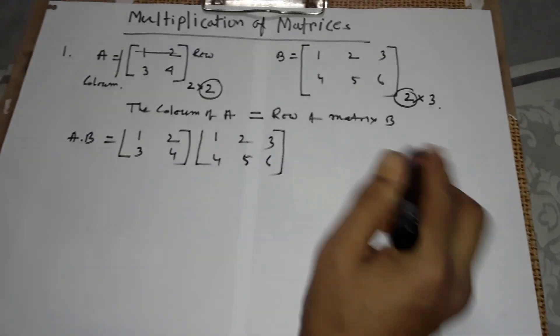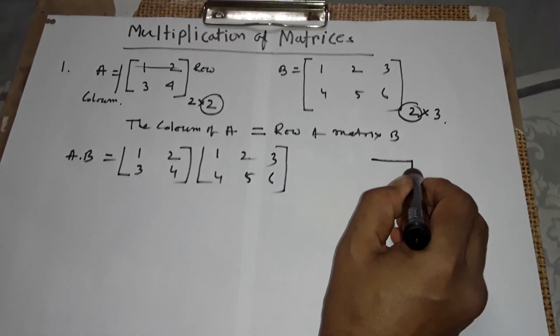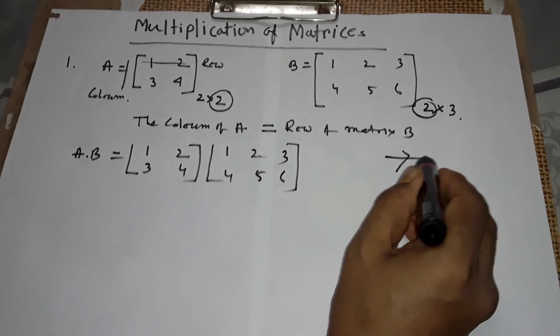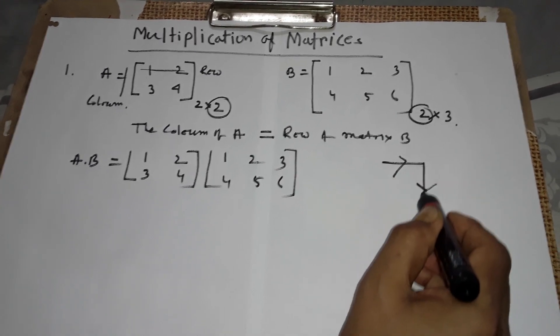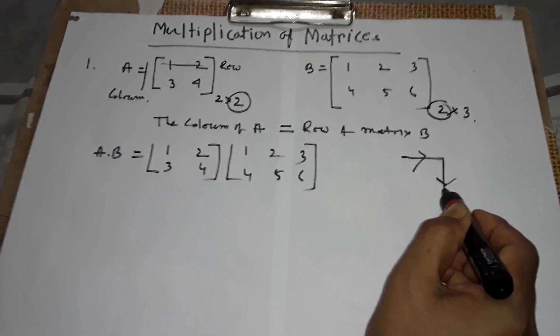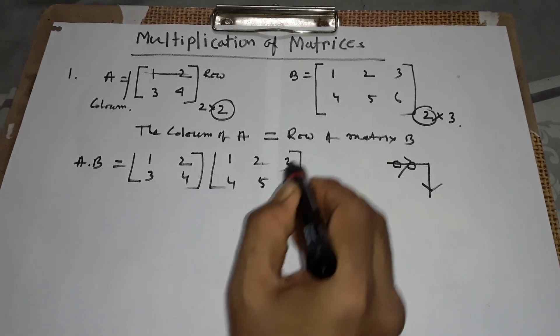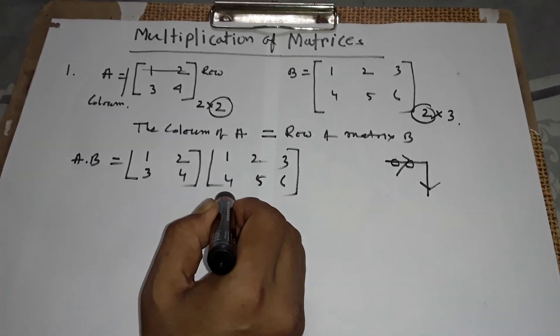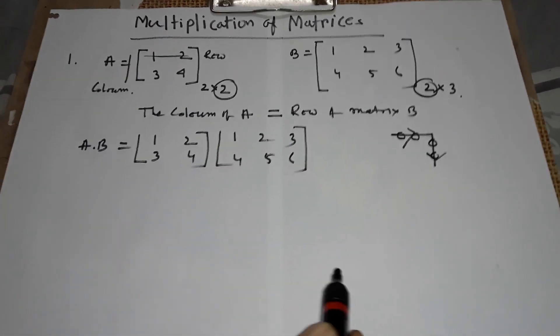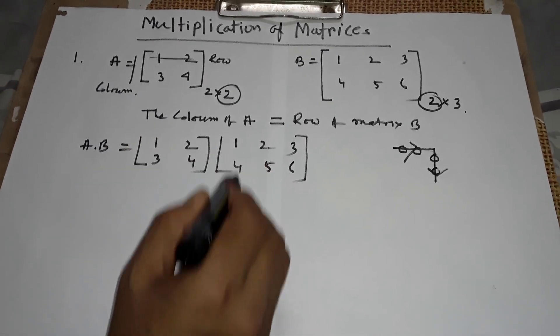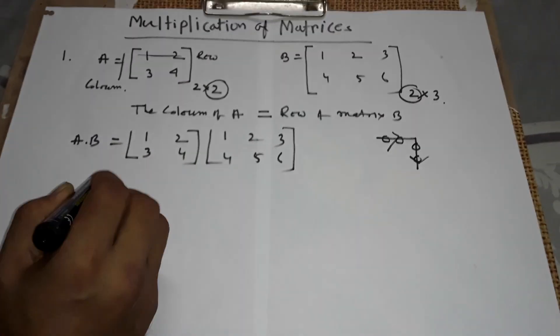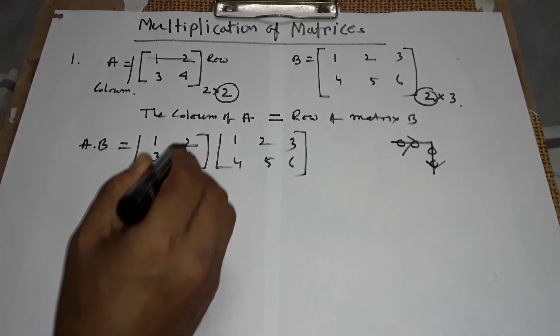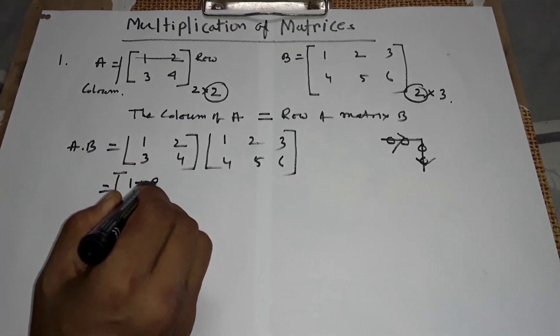In my constraint, you will mind this symbol. This is the row of the first matrix and this is the column of the second matrix. Suppose this is two elements of matrix A and here two elements of matrix B. Now I will multiply this way: 1 into 1, 1 plus 2 into 4, 8.